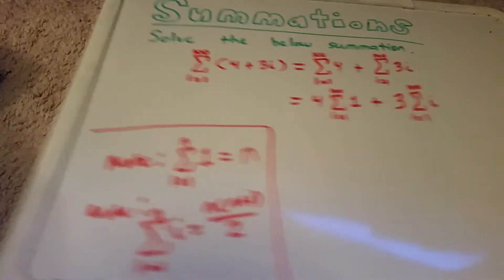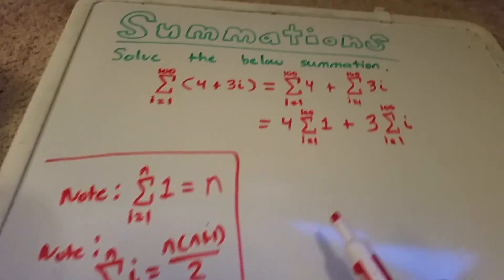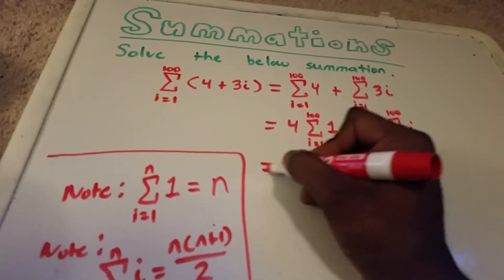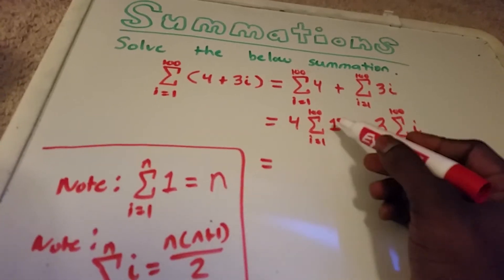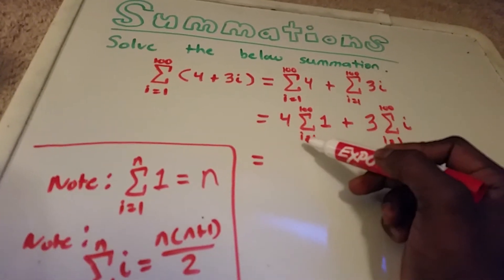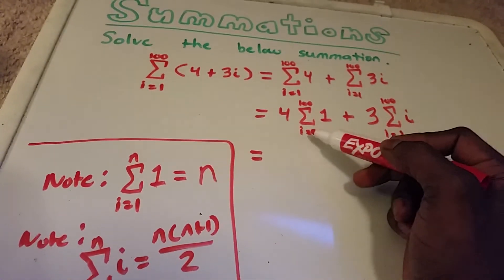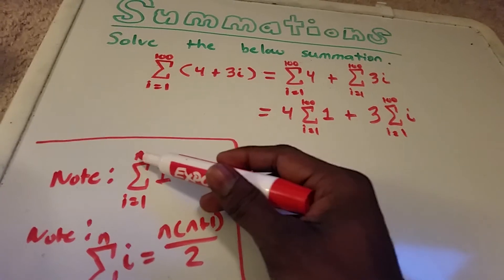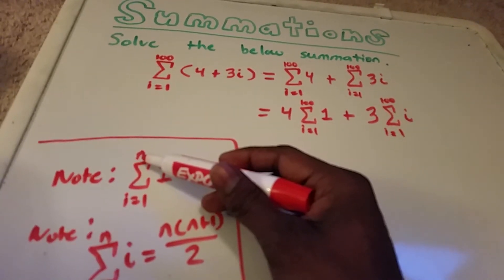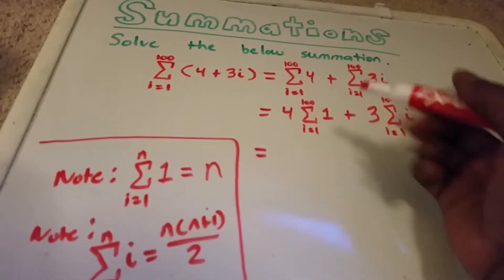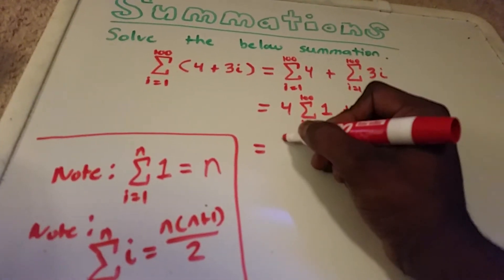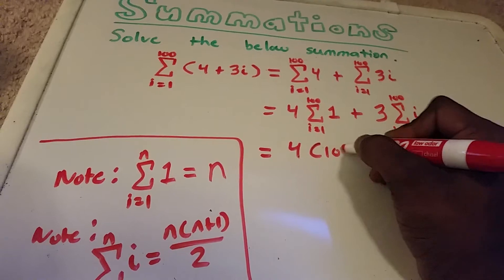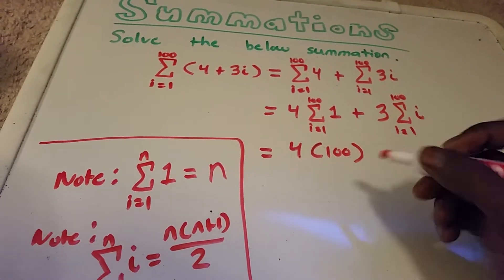So now we have the summation from i equals 1 to 100 of 1. If we replace n with 100 using the first formula, that gives us 4 times 100.